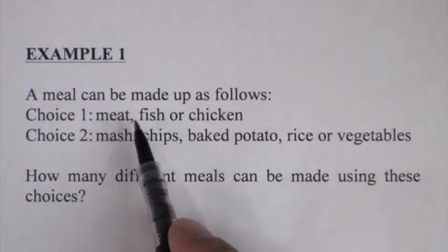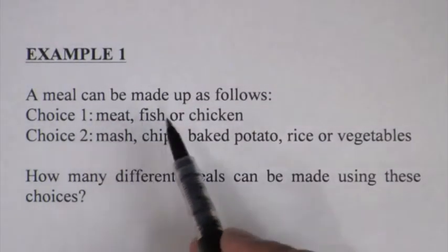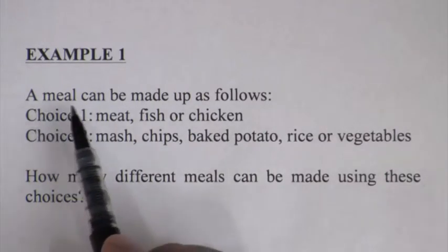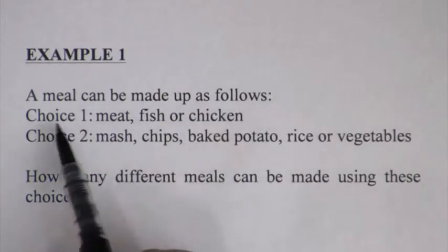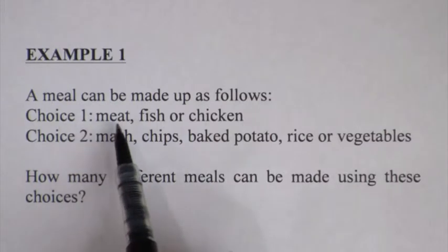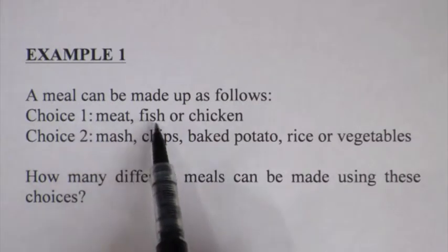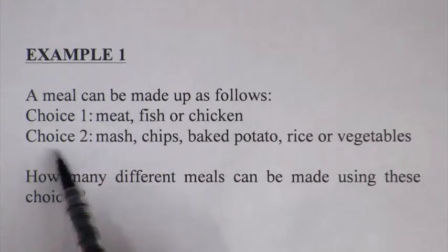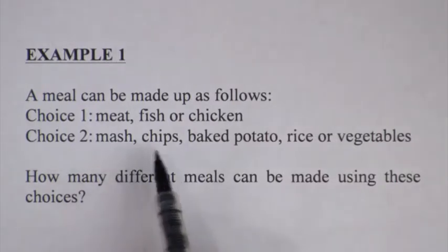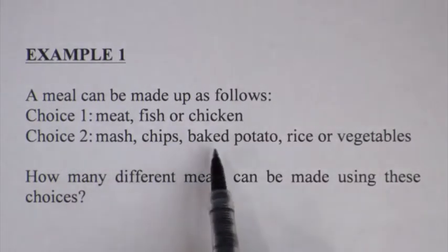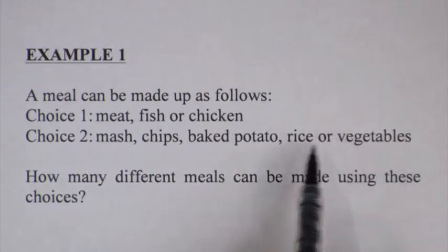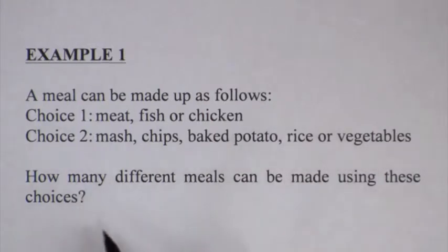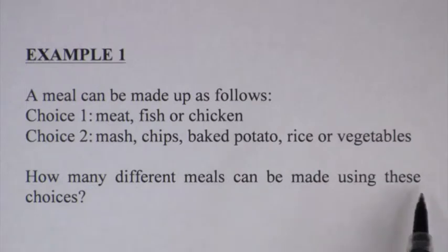Let's look at the first example. A meal can be made up as follows. Choice one: meat, fish or chicken. Choice two: mash, chips, baked potato, rice or vegetables. The question is: how many different meals can be made using these choices?